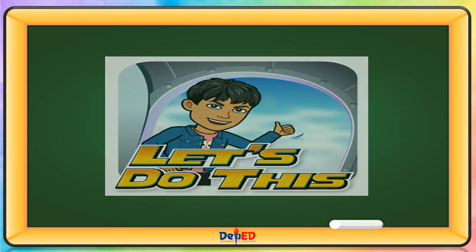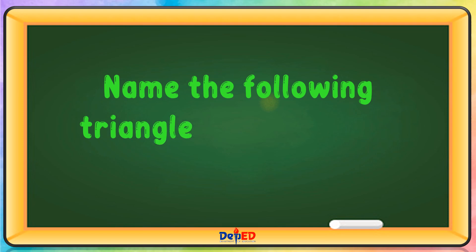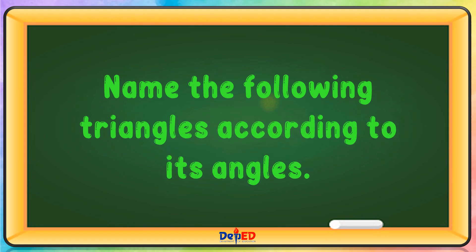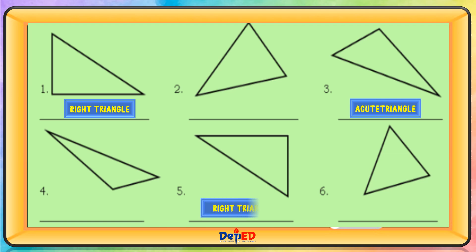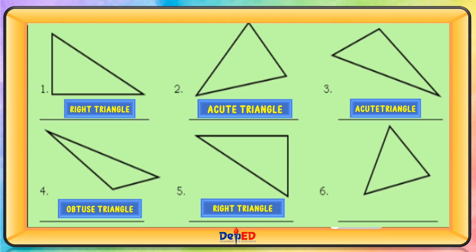Let's do this. Name the following triangles according to its angles. The first triangle is a right triangle. The third triangle is an acute triangle. The fourth triangle is an obtuse triangle. And the sixth is an acute triangle.